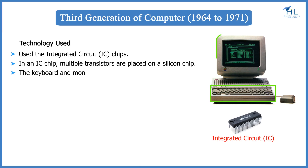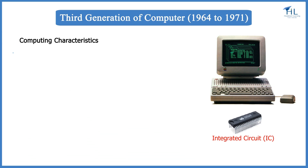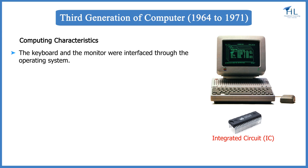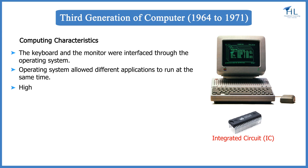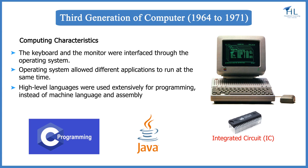The keyboard and monitor were used to interact with the third generation computer, instead of punched cards and printouts. The keyboard and monitor were interfaced through the operating system, which allowed different applications to run at the same time. High-level languages were used extensively for programming instead of machine language and assembly language. The computation time was in nanoseconds.